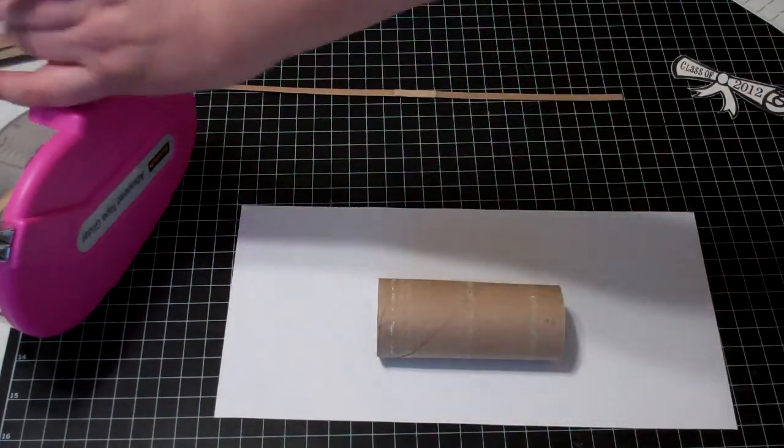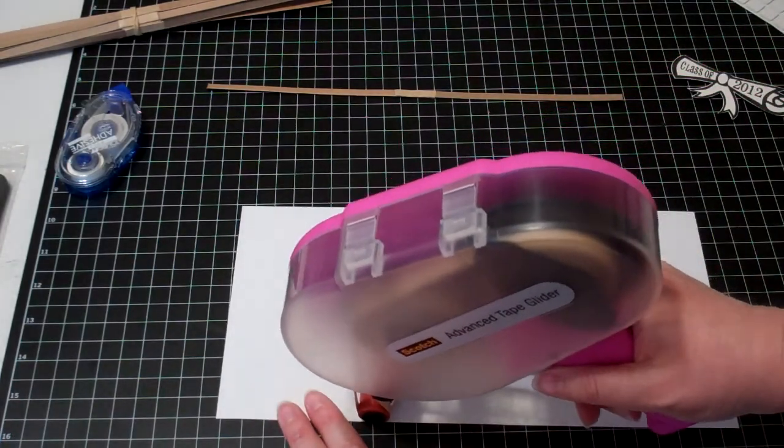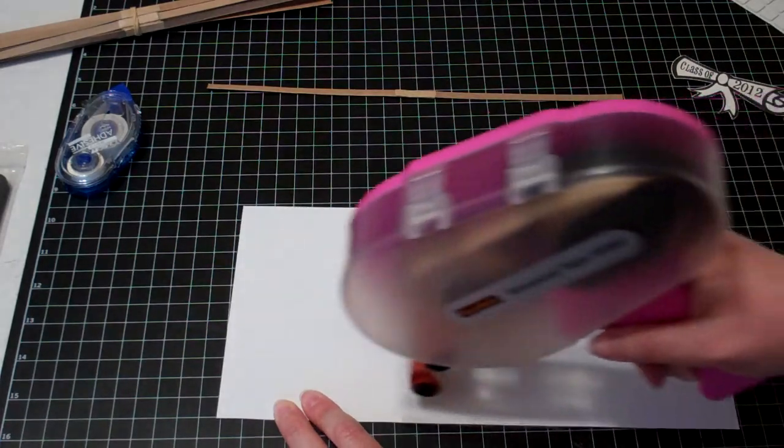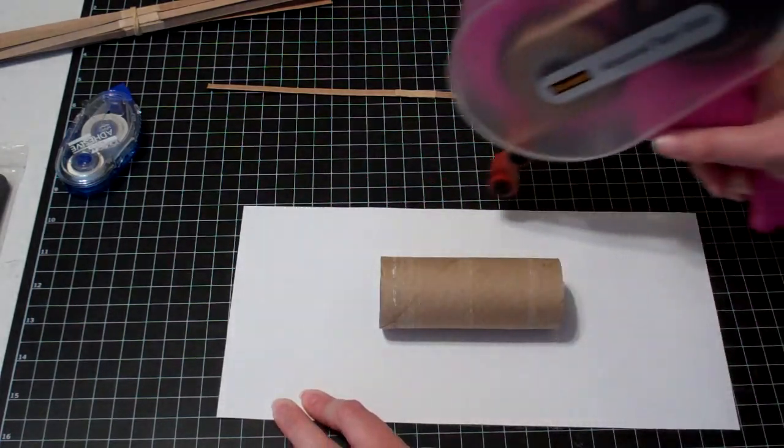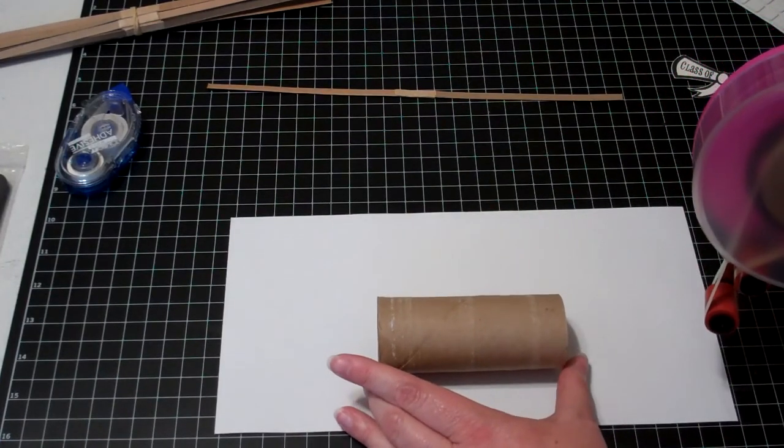What we're going to do, we're going to lay the toilet paper roll on the sheet of paper, and we're just going to run some adhesive. You could use glue, you can use pretty much whatever your favorite adhesive is.